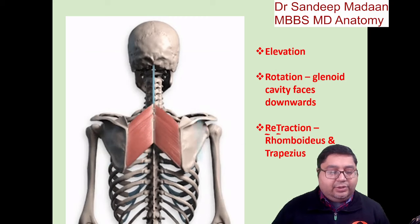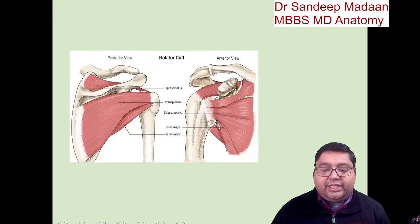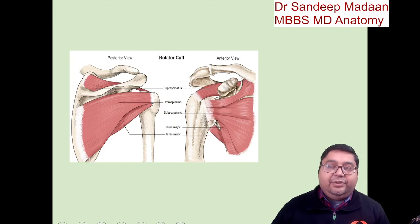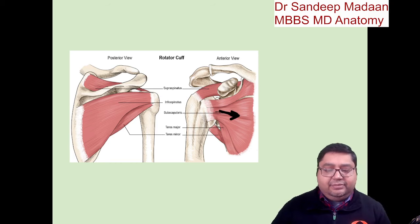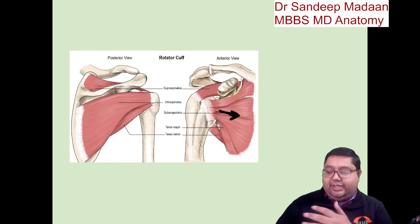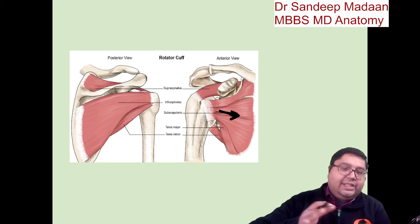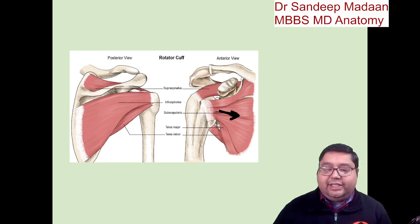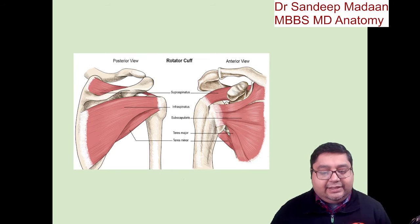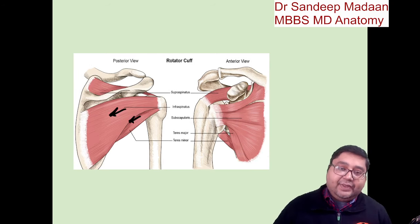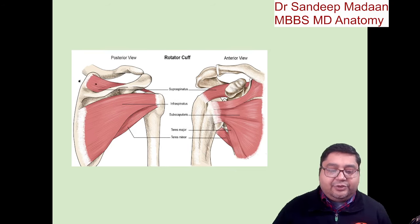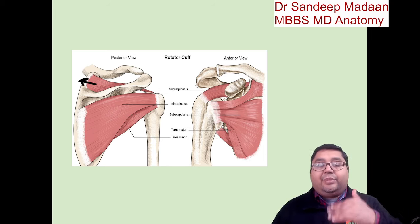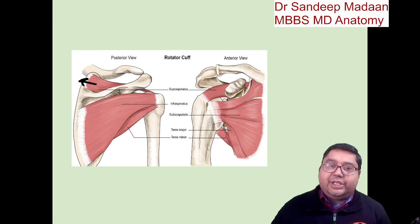Along with these muscles, we will also take one more group: the rotator cuff. We need to see which direction the final pull is coming from. For example, subscapularis — the final pull is coming from the front, so applying your logic, it will do medial rotation. These two muscles are pulling from behind, so which rotation? Lateral rotation. But when the supraspinatus contracts, it pulls from above — neither front nor behind — so which rotation? No rotation.